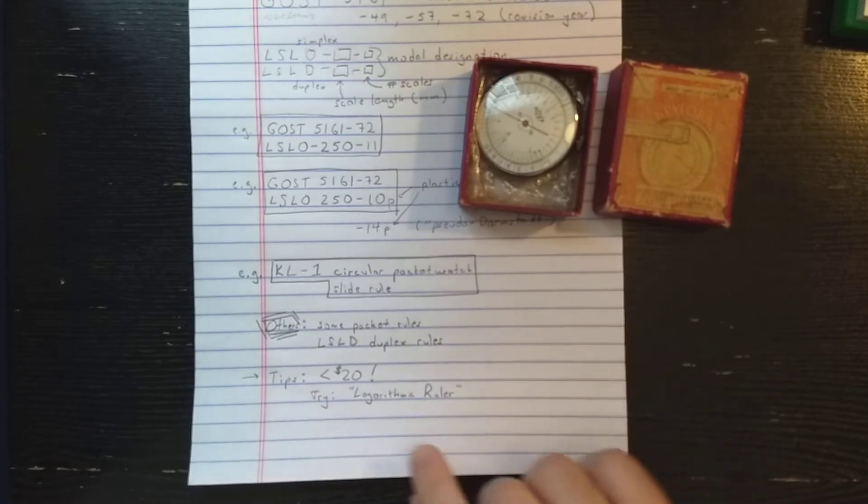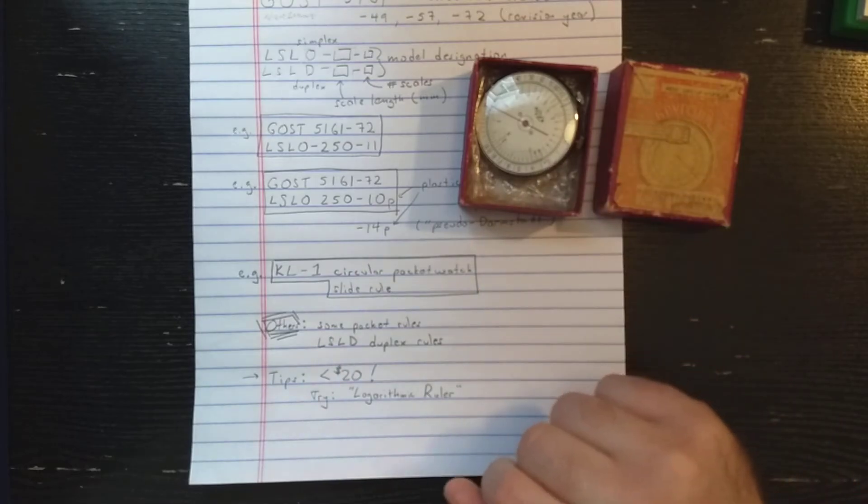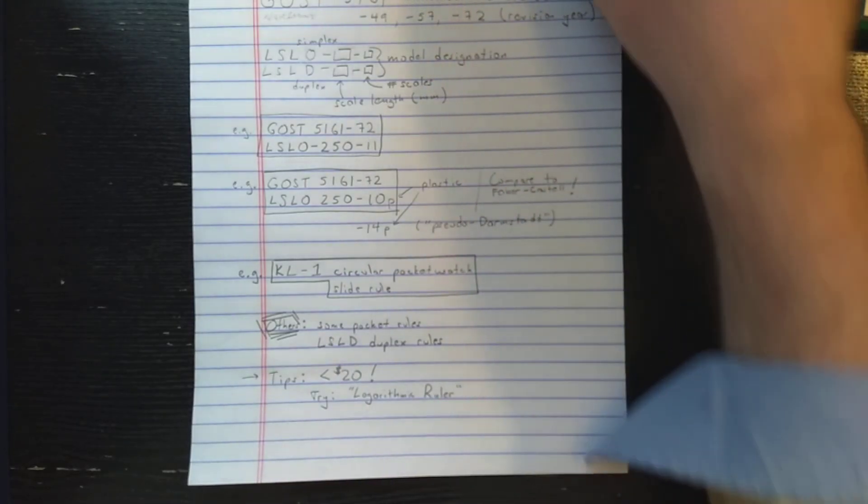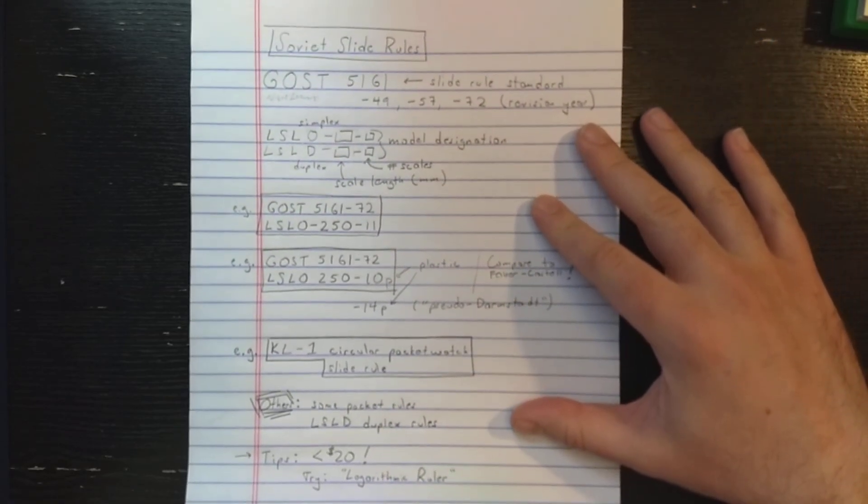But some tips if you're trying to buy these online: you could try searching 'logarithmic ruler,' which is the translation of the Russian name. So if you go on eBay and search logarithmic ruler, you might get some hits that you won't get otherwise. And besides the KL1, you can get all these other slide rules less than $20, even shipped to you. So good luck adding some Soviet slide rules to your collection.